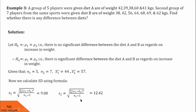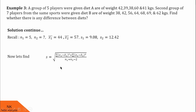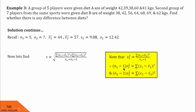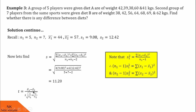Now we use S1 and S2 to calculate S, given by the formula under root of [summation (X1 minus X1 bar) squared plus summation (X2 minus X2 bar) squared], divided by (N1 plus N2 minus 2). As seen in the earlier example, summation (X1 minus X1 bar) squared can be replaced by (N1 minus 1) into S1 squared, and summation (X2 minus X2 bar) squared can be replaced by (N2 minus 1) into S2 squared. After replacing and substituting, the value of S is 11.20. Using this, the test statistic given by X1 bar minus X2 bar divided by S into under root (1/N1 plus 1/N2) gives a value of minus 1.9822.